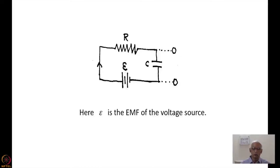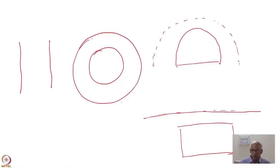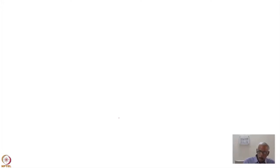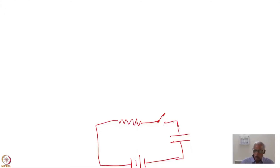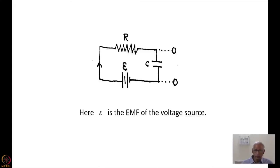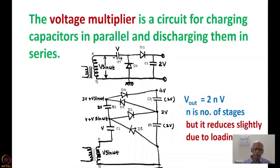So it effectively looks like this: there is a resistance, a battery, and I put a capacitor and a key. As soon as I close this key, it becomes a closed circuit with current flowing. In the case of the Cockcroft-Walton kind of multiplier shown above, the first one and the second one are similar — the details are given in the second one. The voltage is basically a voltage multiplier, and it is a circuit where the charging of capacitors takes place in parallel and discharging in series. That is how the voltage across the capacitors is generated.